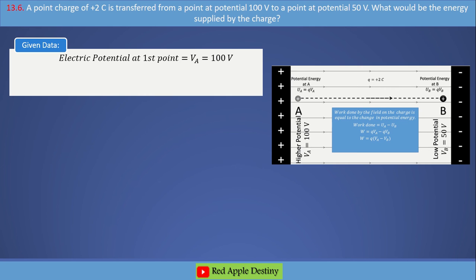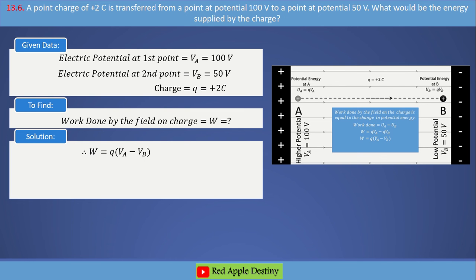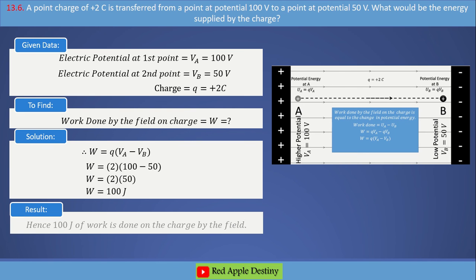Given data: VA equals 100 volts, VB equals 50 volts, and Q equals 2 coulombs. Using the formula W equals Q into (VA minus VB), putting in the values gives 100 joules. Hence, 100 joules of work is done on the charge by the field.